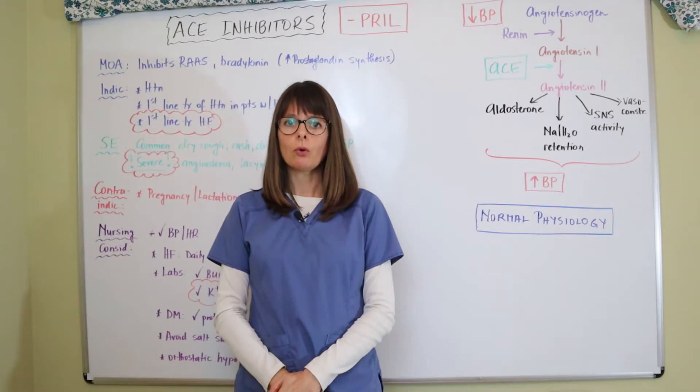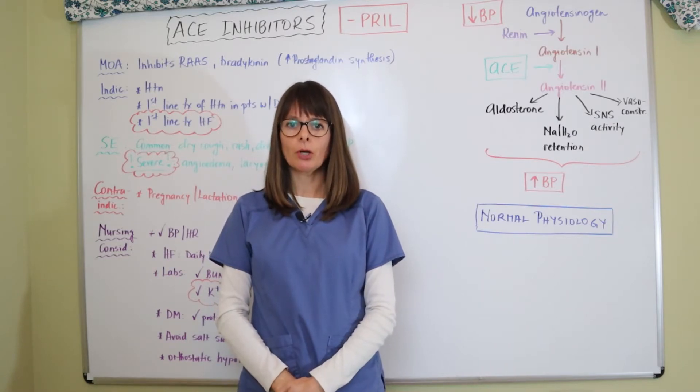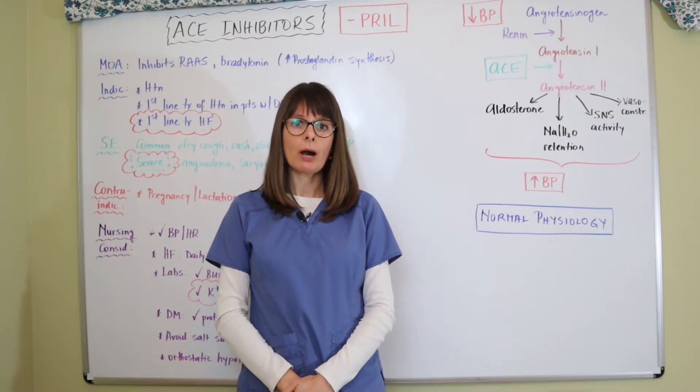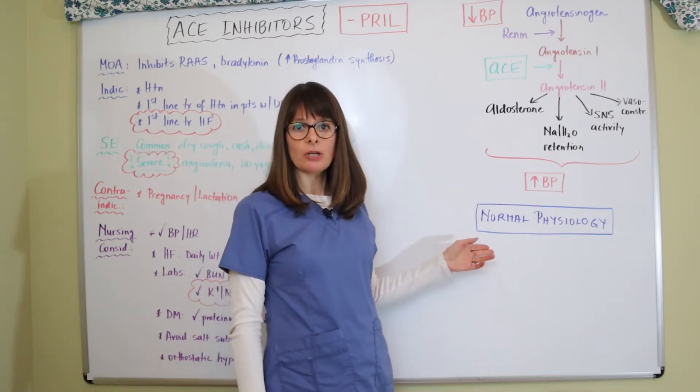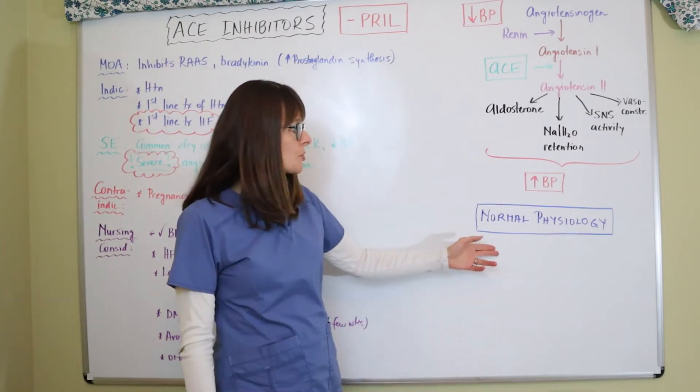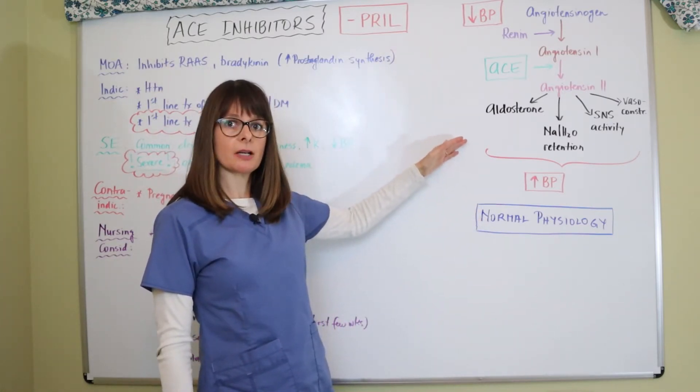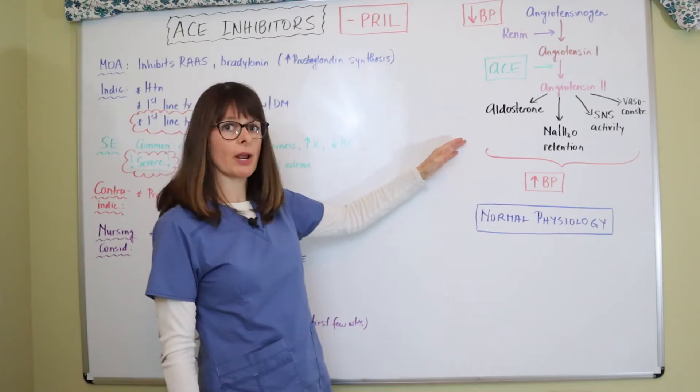And to really know how ACE inhibitors work, we have to take a look back at the physiology and how our body usually responds to a decrease in blood pressure. So this is under normal circumstances, our bodies are designed with the renin, angiotensin and aldosterone system to respond to a low blood pressure.